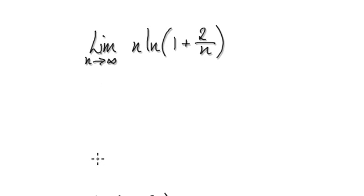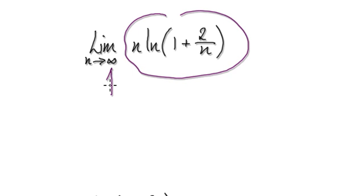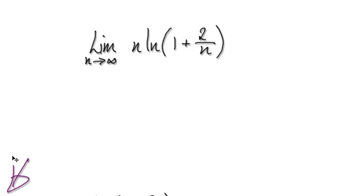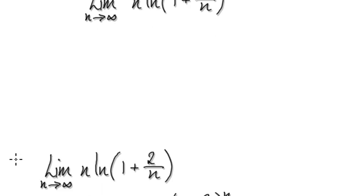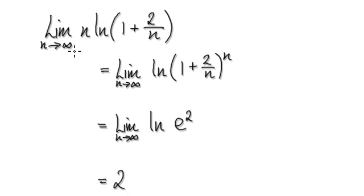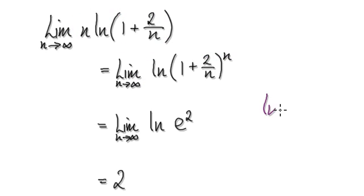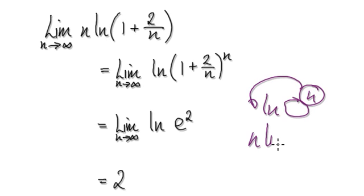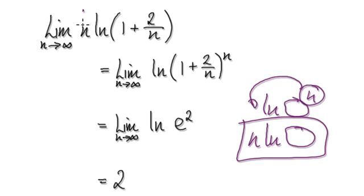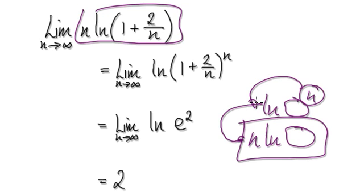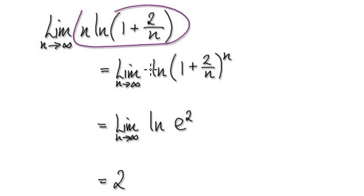Next one. Find the limit of this sequence as n tends to infinity. Press pause and have a go. The trick here is to rewrite this as an exponential expression. If you take the natural log of something to the power of n, you move the n down, giving you n times the natural log of the expression. So we are going backwards here — pushing the power back up. Rewrite it as this.